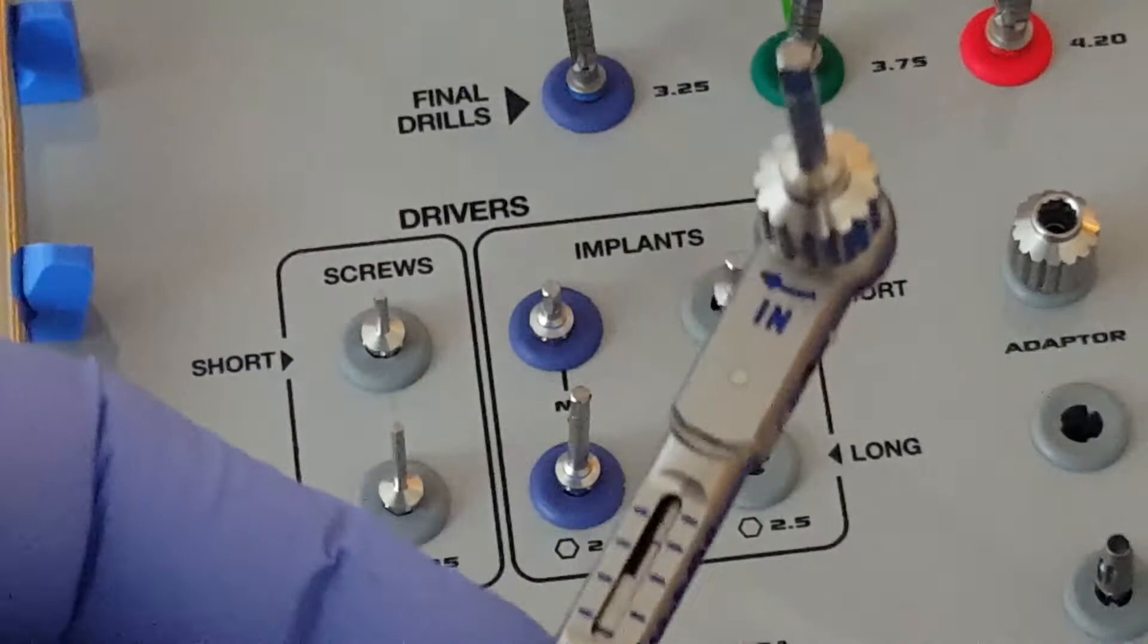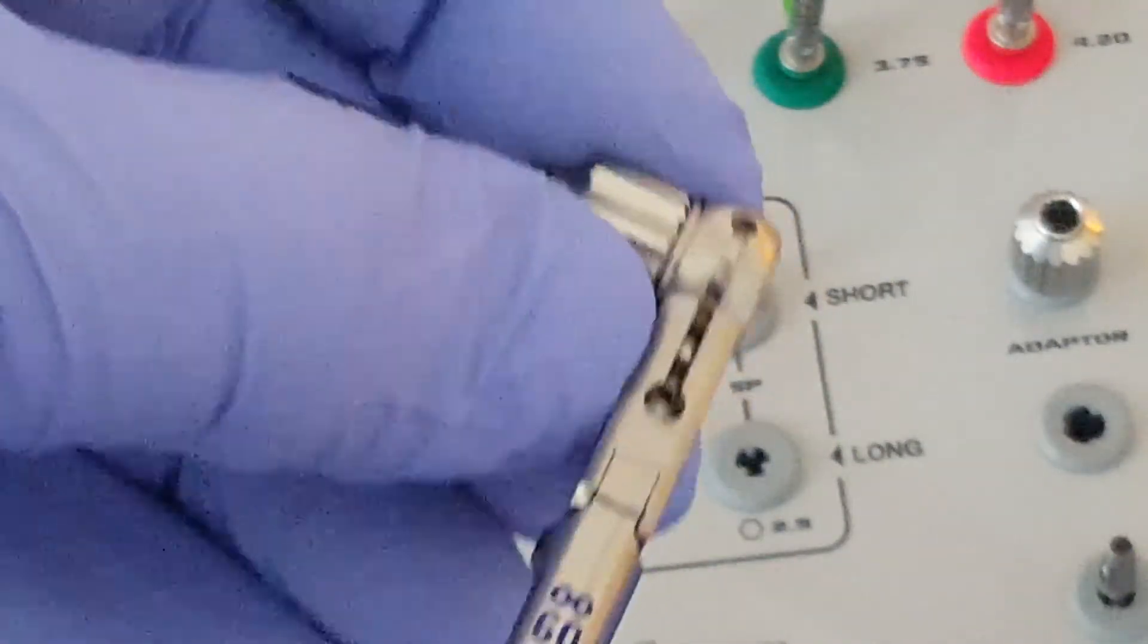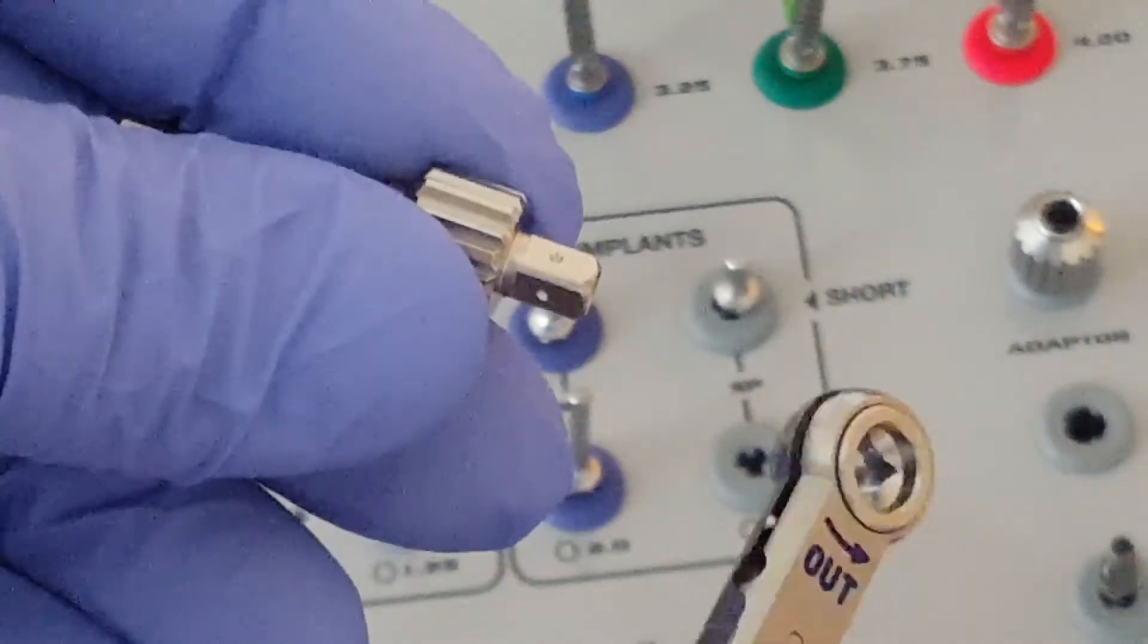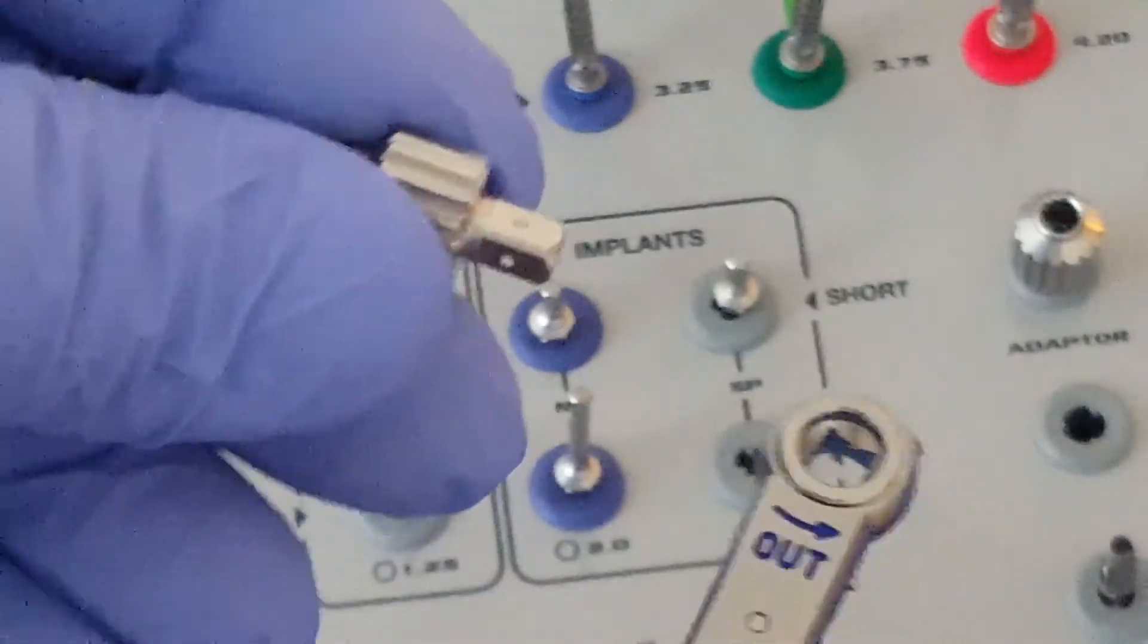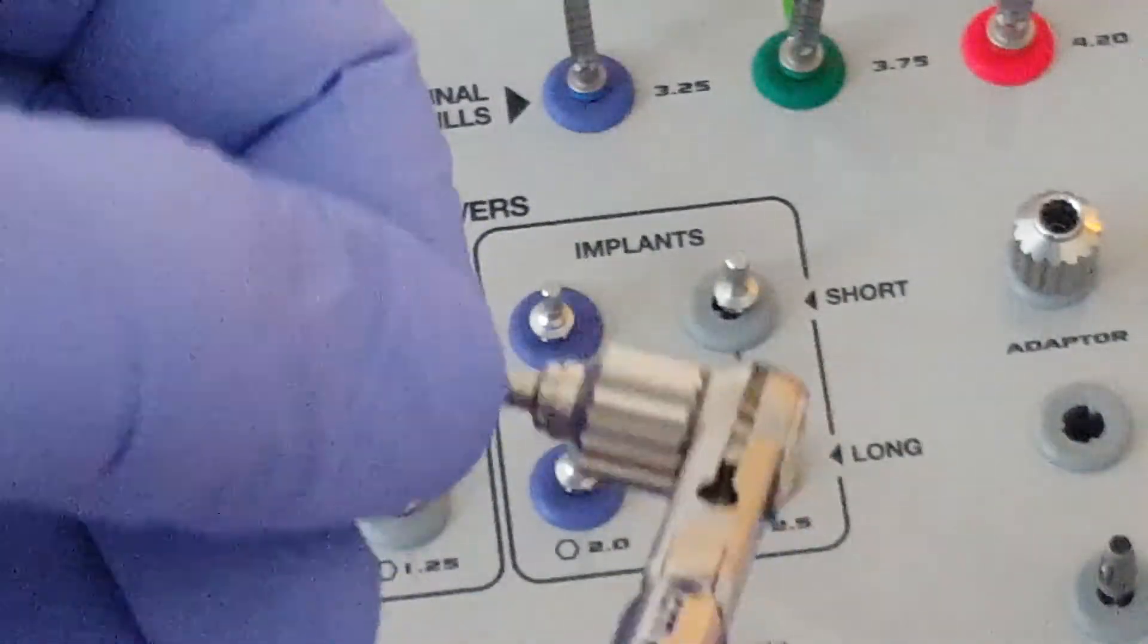If you want to reverse the implant, then simply remove the adapter with the implant insertion key, go to the side that says out, reinsert it, and it will now work in reverse.